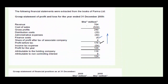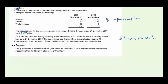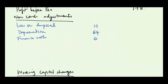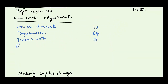Still on the P&L: there is a share of profit after tax of associate of 4. This is a non-cash adjustment, so we add it back under non-cash adjustments as 'share of associates' PAT: 4.' Since it was income we deduct it. We then determine what amount of dividend was received from the associate.